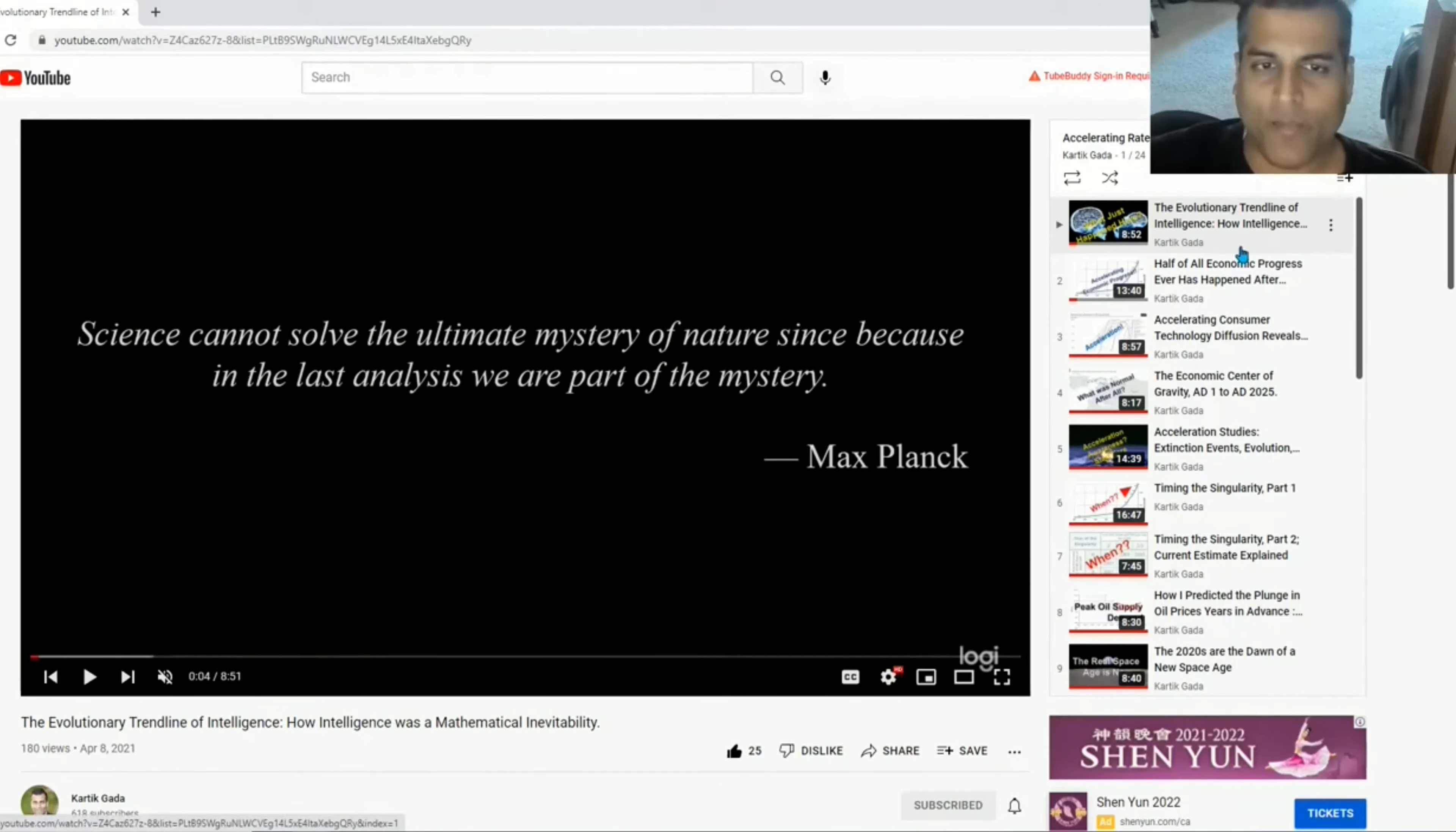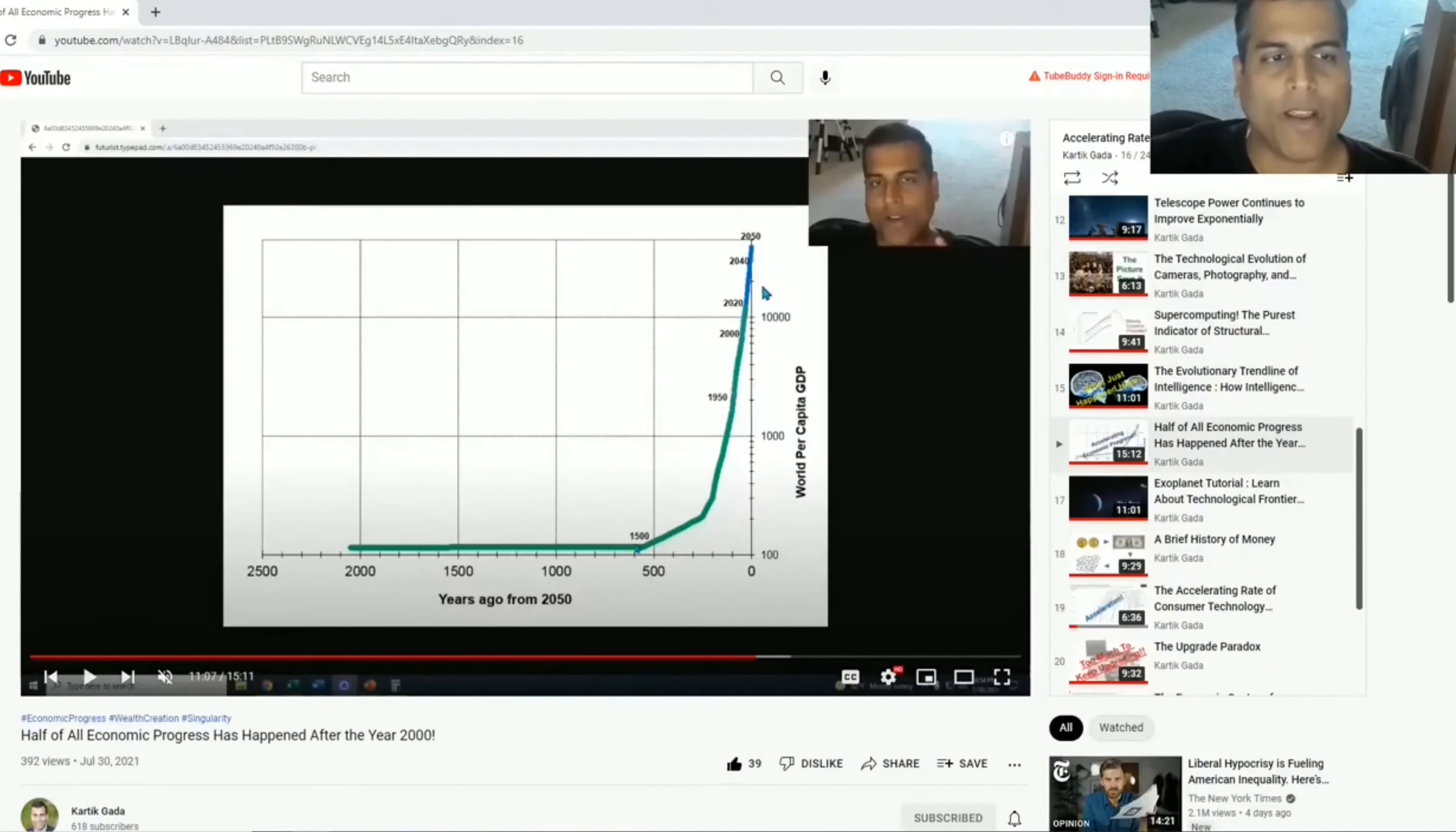When we get to the accelerating rate of change as a subject, obviously we talk about the technological singularity. I refer you to my videos in this playlist, including a two-part video about timing the technological singularity. There's also this economic growth progress video that I talked about, which is crucially important. Here you can see me talking about the accelerating rate of economic growth. Half of all economic progress has happened after the year 2000. And as we go into the future, this midpoint also moves forward. There will be a time in the not too distant future where we can say half of all economic progress has happened after 2021. That could be only 14 or 15 years away.